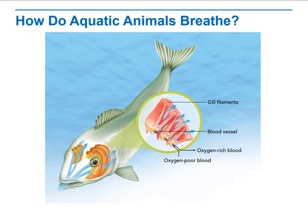How do aquatic animals breathe? Aquatic animals contain gill filaments. These gill filaments are responsible for the gas exchange, and they contain blood vessels. These blood vessels exchange between oxygen-rich blood and oxygen-poor blood, meaning the blood that contains carbon dioxide and the blood that contains oxygen. The gas exchange underwater goes through these gill filaments, which are very thin layers where it is easier for oxygen and carbon dioxide to diffuse and exchange.